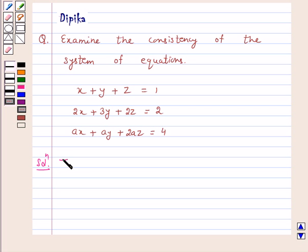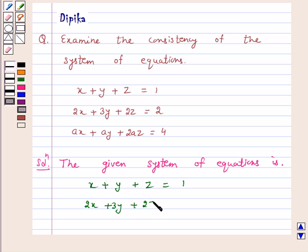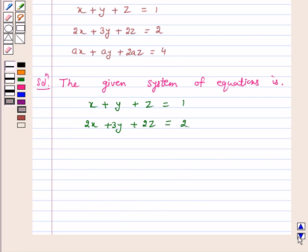The given system of equations is x plus y plus z is equal to 1 and 2x plus 3y plus 2z is equal to 2 and ax plus ay plus 2az is equal to 4. So we know that the system of equations